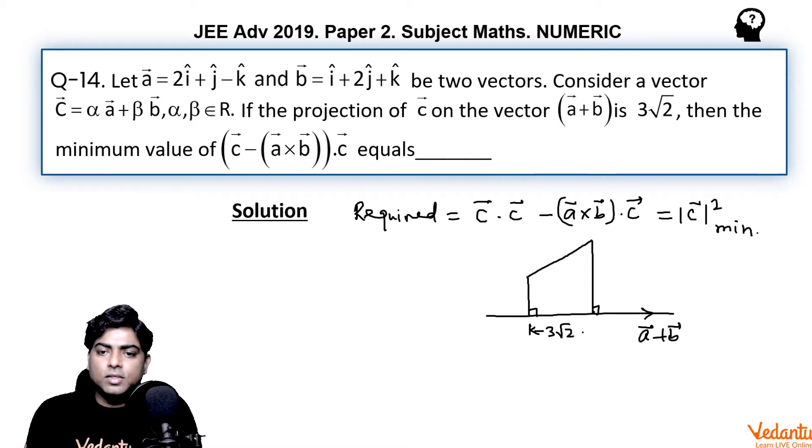So how simply this question can be solved. C vector, let's take the angle between c and a line parallel to a + b. The angle between c and a + b is given as theta. Then what is the projection of c? Projection would be mod c cos theta, and that is given as 3 root 2.